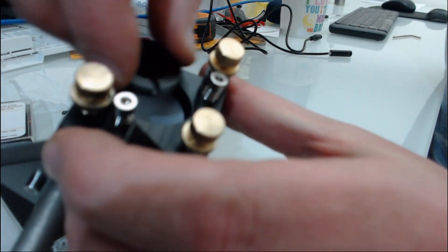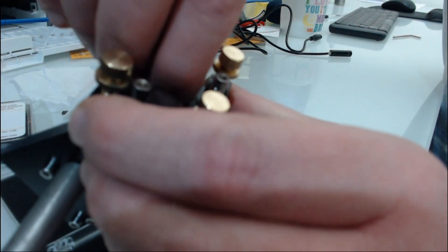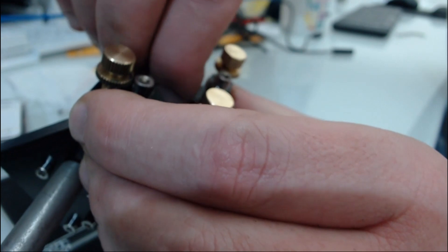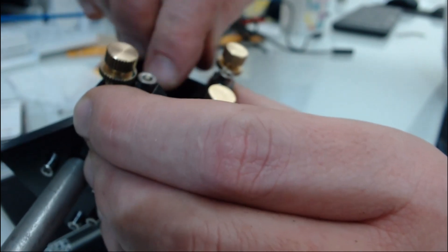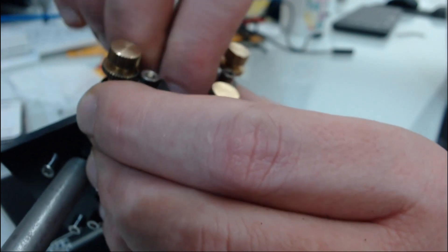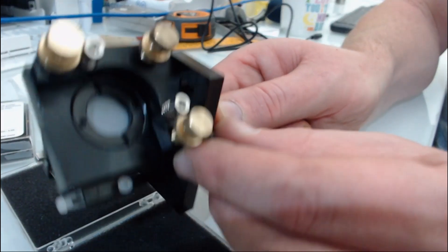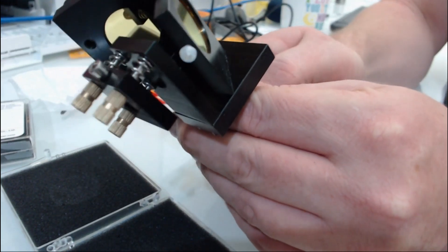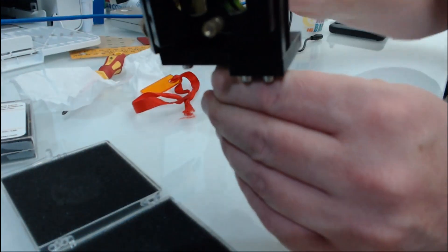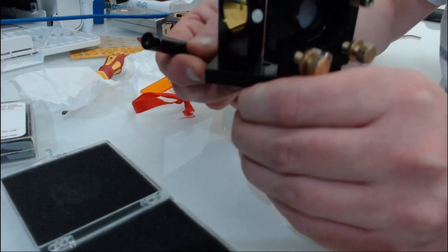So the reflective side is pointing towards the other lens we put in and then tighten this up. So the mirror is in and the beam combiner lens is in. So the next thing we need to do is mount the red dot.